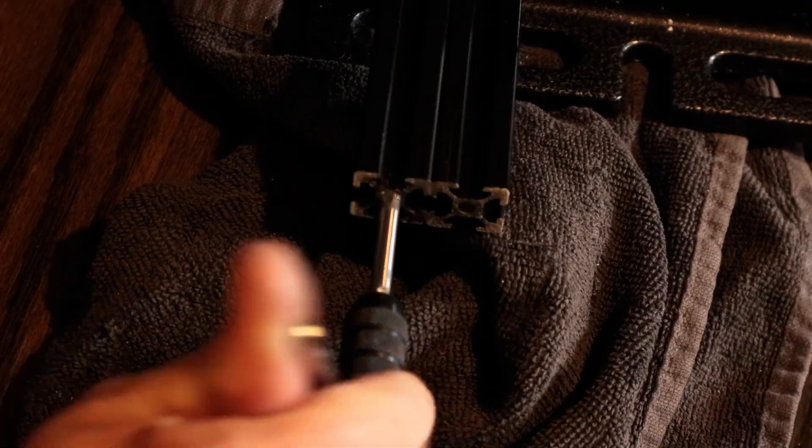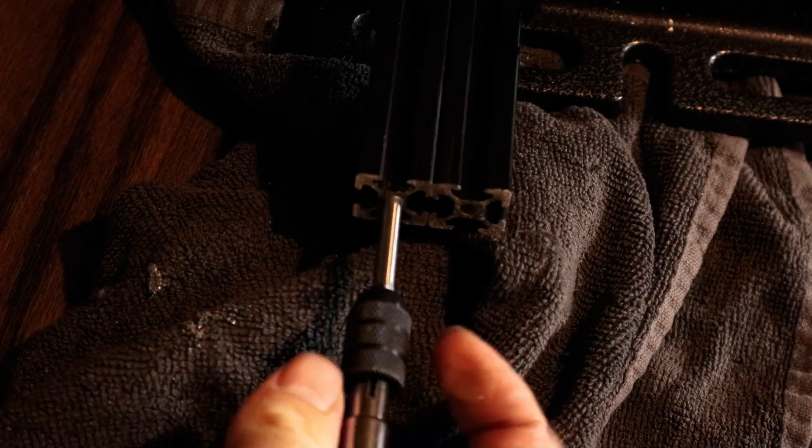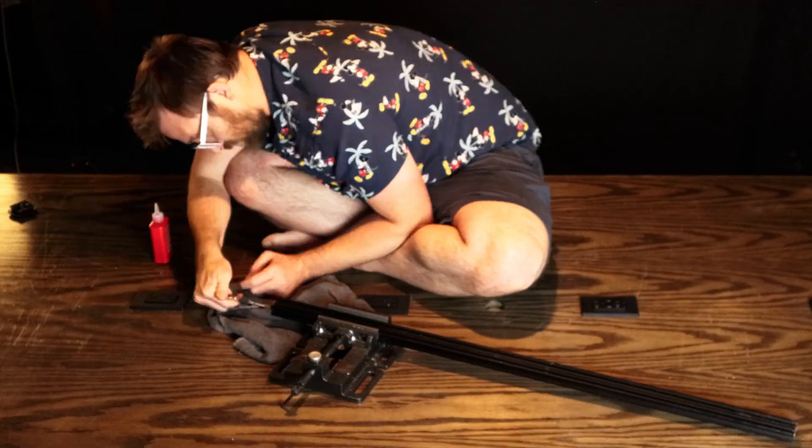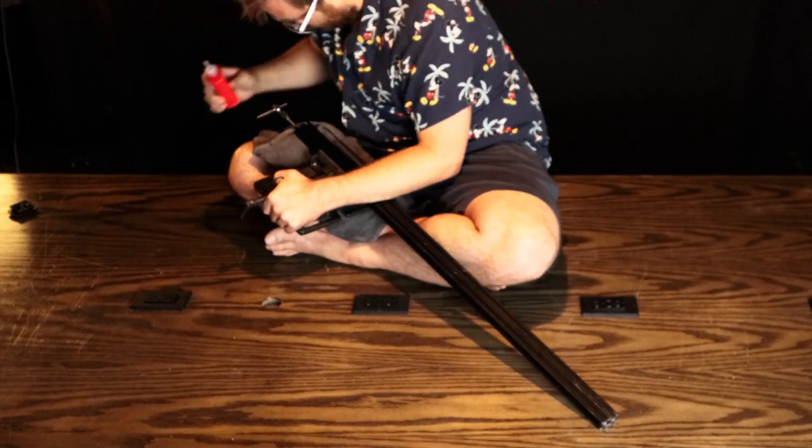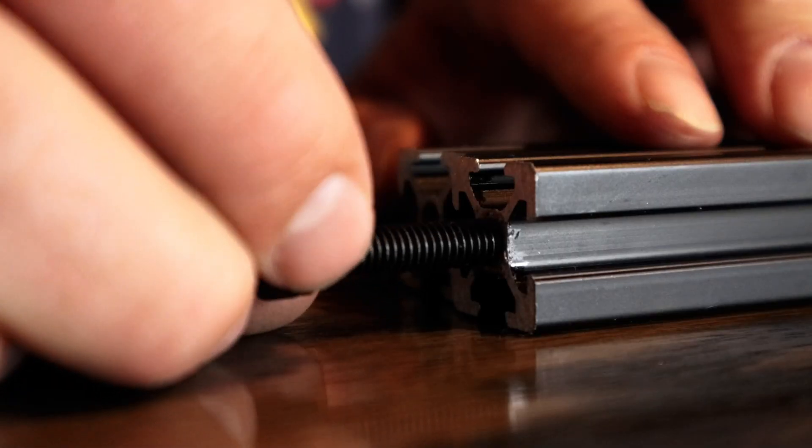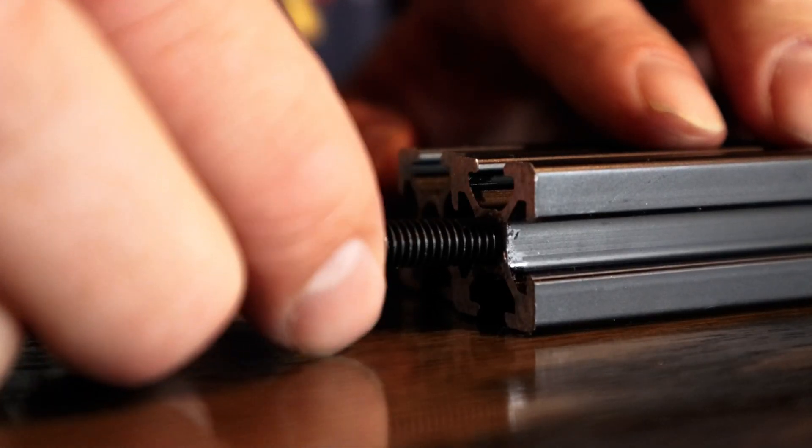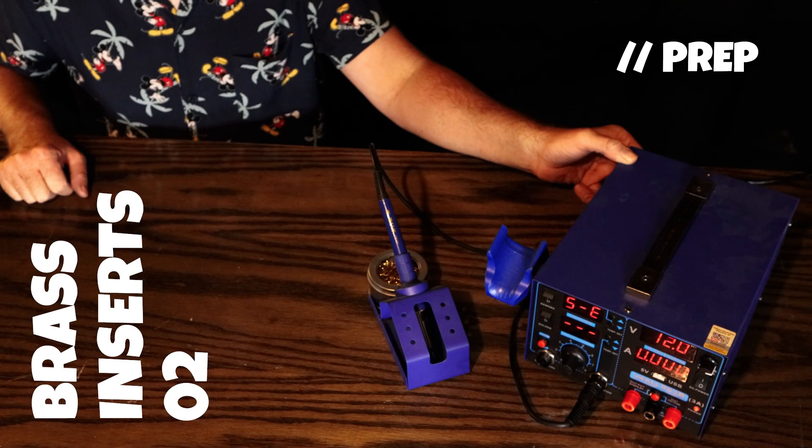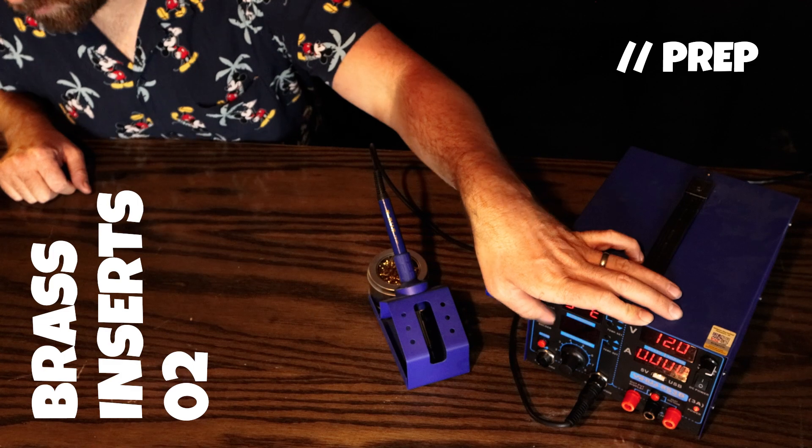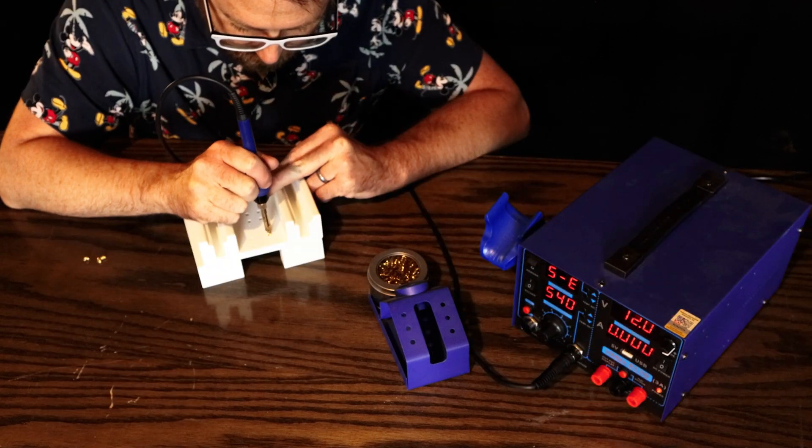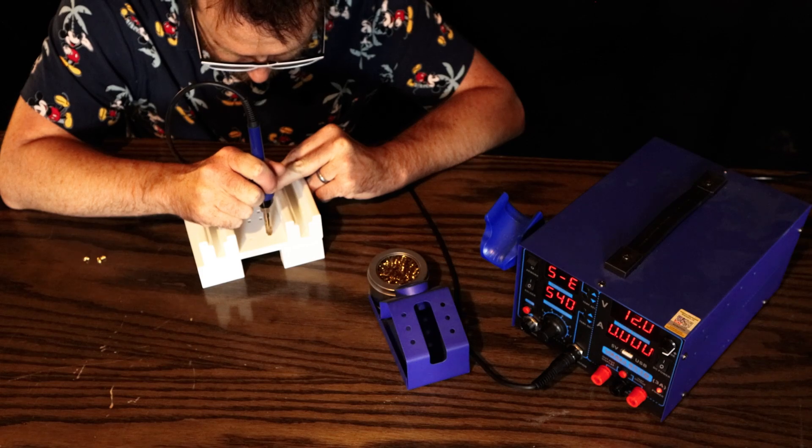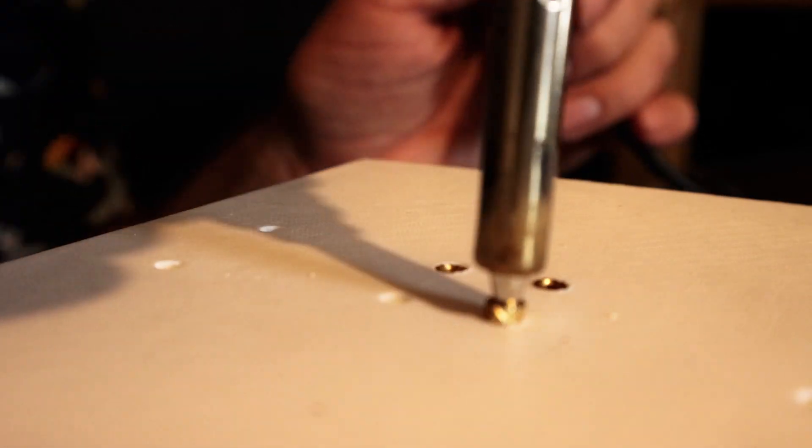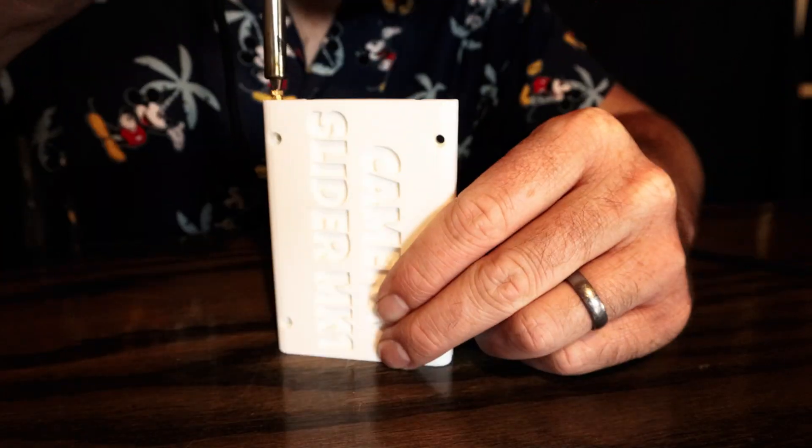What you're seeing here is me doing M5 bolt tapping directly into the aluminum, which took forever. Now I'm doing the brass inserts - these help connect all the parts easily with just the bolts, tying the 3D prints together really well.